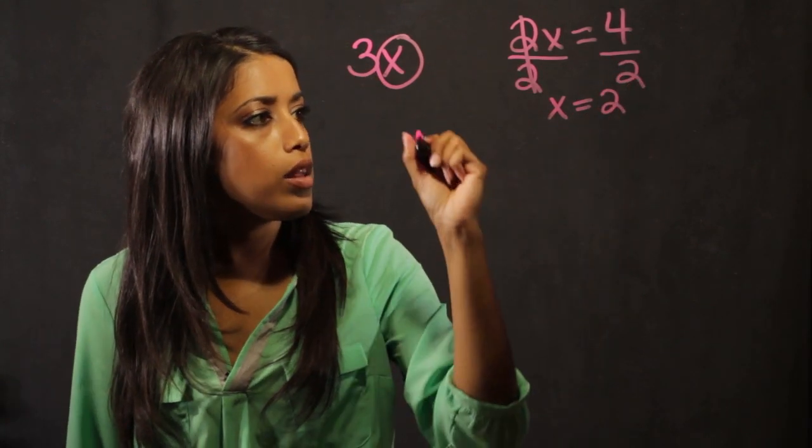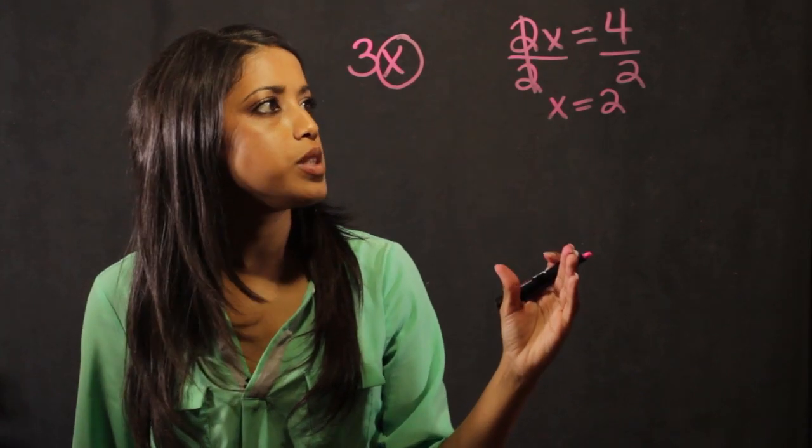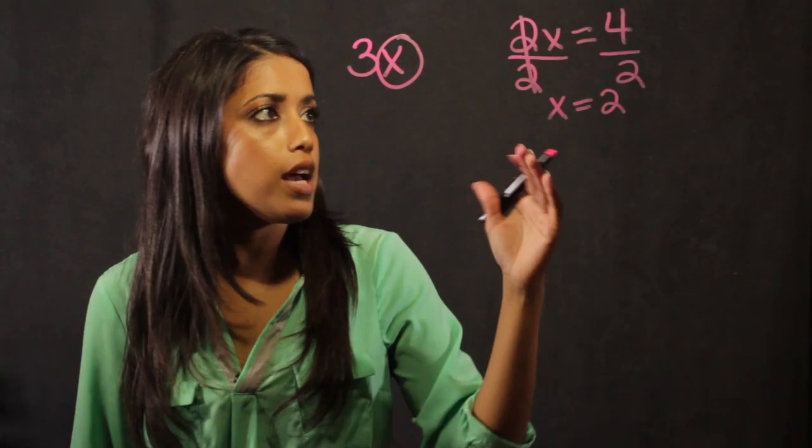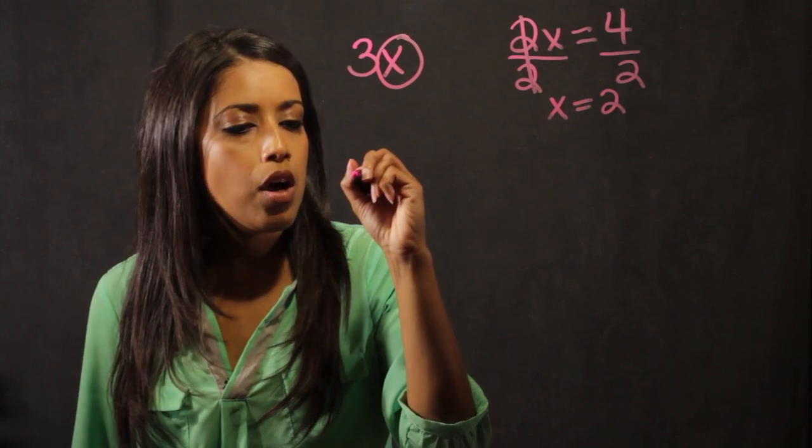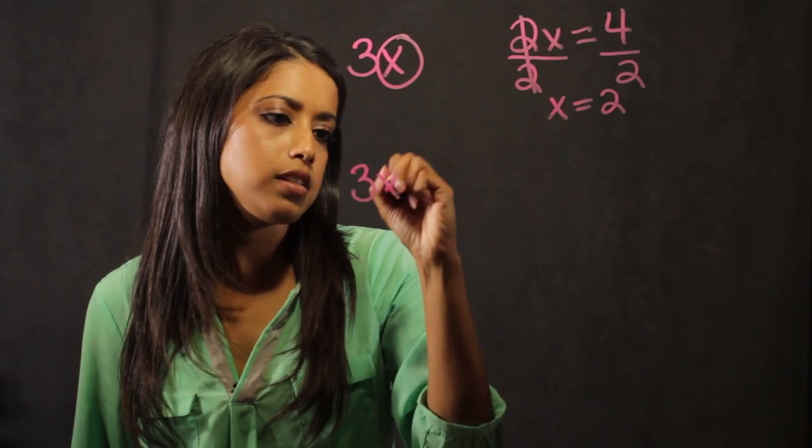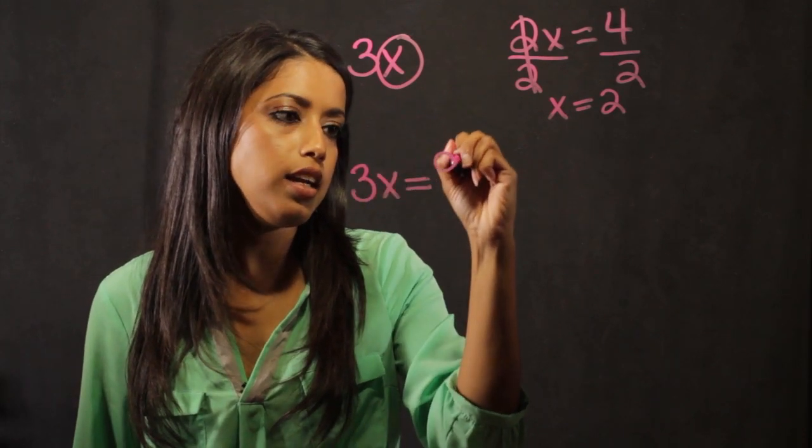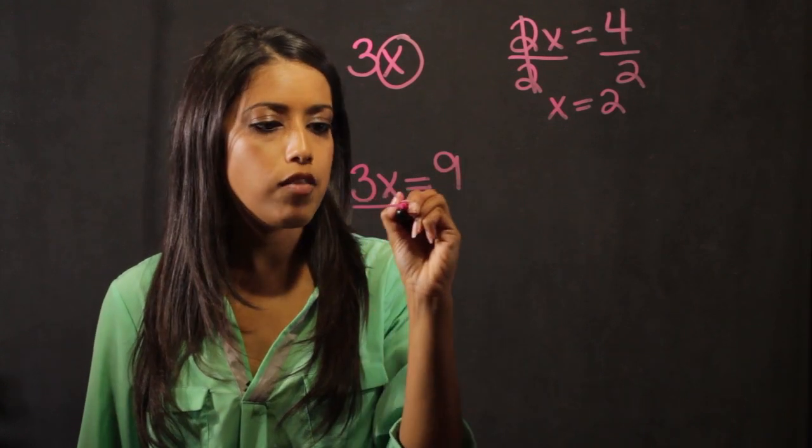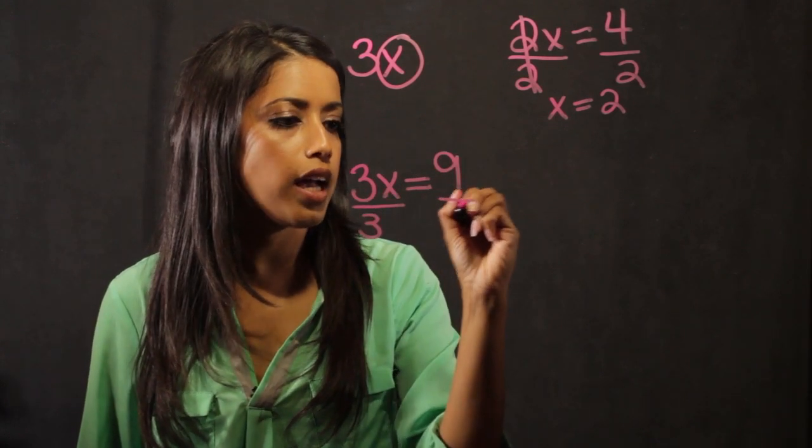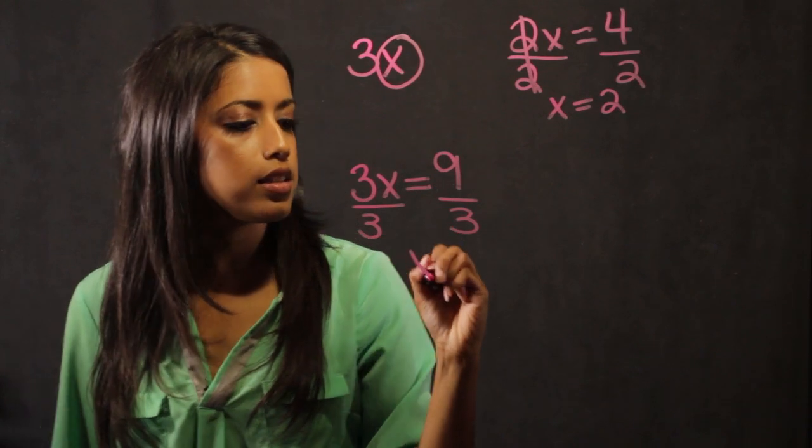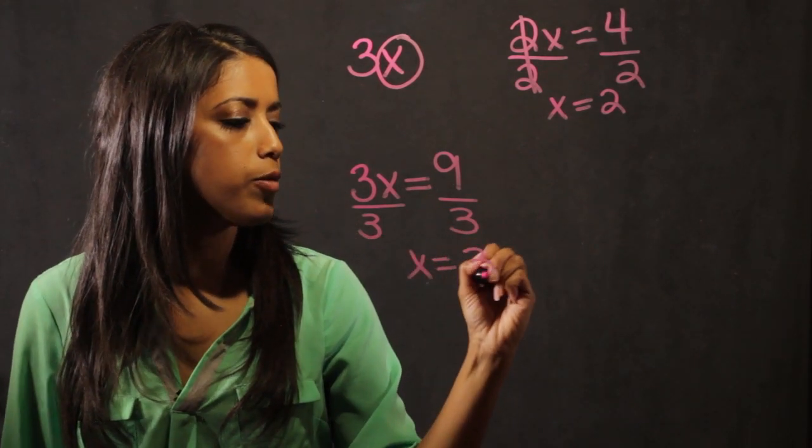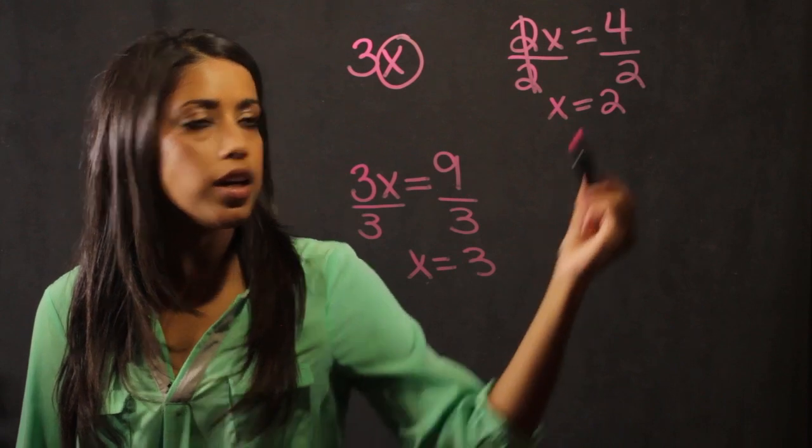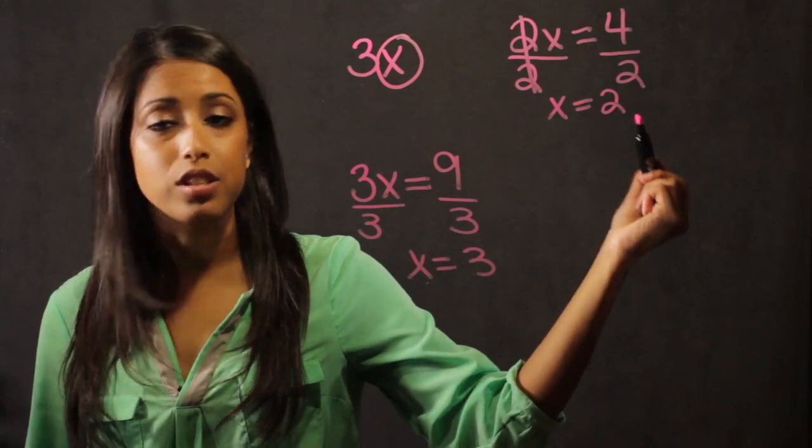Also, the other thing in working with variables is that they can be different from problem to problem. If I take the example 3x is equal to 9, I get x by itself by dividing by 3 on both sides. x equals 3. In this problem x is equal to 3, but in this problem x is equal to 2.